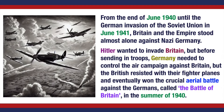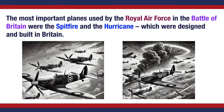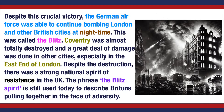From the end of June 1940 until the German invasion of the Soviet Union in June 1941, Britain and the Empire stood almost alone against Nazi Germany. Hitler wanted to invade Britain, but before sending in troops, Germany needed to control the air campaign against Britain. The British resisted with their fighter planes and eventually won the crucial aerial battle against the Germans, called the Battle of Britain, in the summer of 1940. The most important planes used by the Royal Air Force were the Spitfire and the Hurricane, which were designed and built in Britain. Despite this crucial victory, the German Air Force was able to continue bombing London and other British cities at night-time. This was called the Blitz.